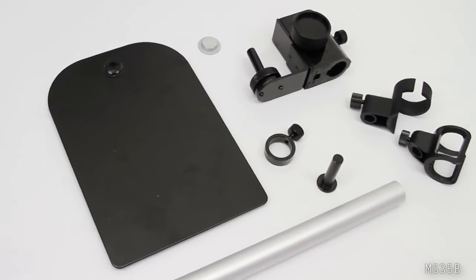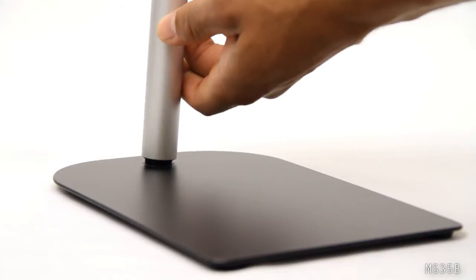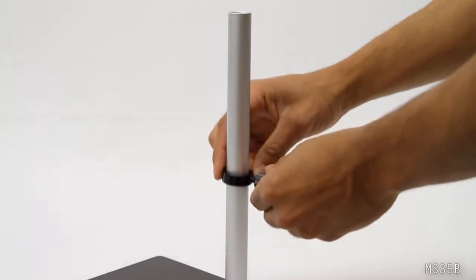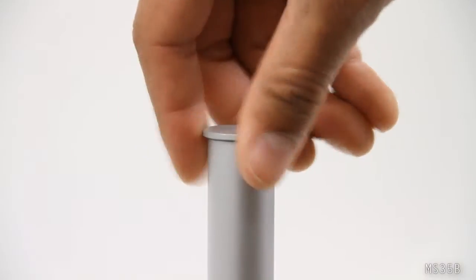The MS-35B is easy to assemble. Connect the vertical pole into the base, slide the safety collar and block on the pole, and lock with rear set screws.